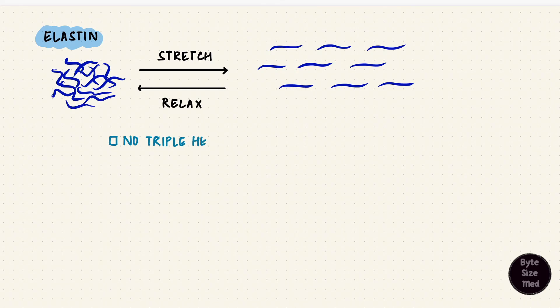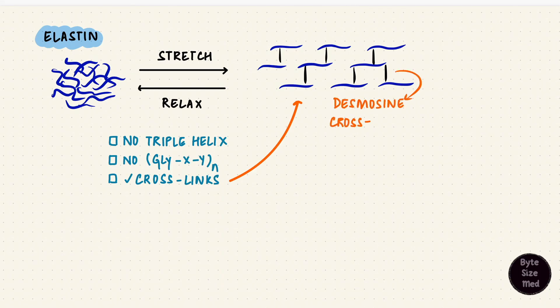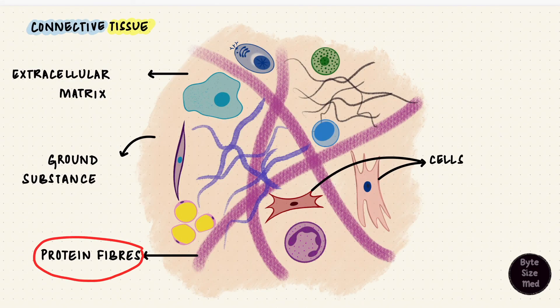Elastin does not have the triple helical structure that collagen has, and it also doesn't have the repeating glycine-X-Y sequence. It has glycine, valine, proline, and alanine, but not that specific glycine-X-Y sequence seen in collagen. Elastin does develop crosslinks by lysyl oxidase, but they're different from collagen's — these are called desmosine crosslinks, and they are unique to elastin. Collagen gets broken down by collagenases, whereas for elastin it's elastases. Together with collagen and reticulin, they are all the protein fibers of connective tissue.